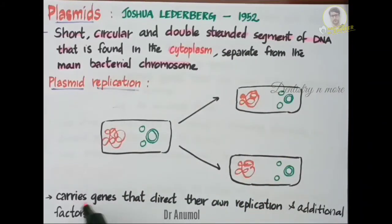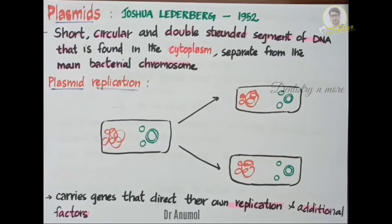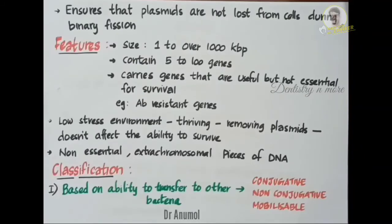They carry genes that direct their own replication and additional factors. These additional factors ensure that the copies get separated into new daughter cells, and also ensure that plasmids are not lost from cells during binary fission.